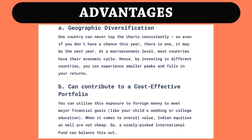Number 1: Geographic Diversification. One country can never top the charts consistently. Even if you don't have a chance this year, it may be the next year. At a macroeconomic level, most countries have their own economic cycle. Hence, by investing in different countries, you can experience smaller peaks and falls in your returns.